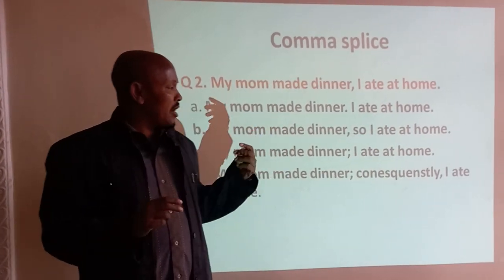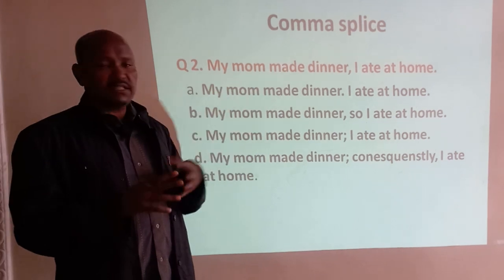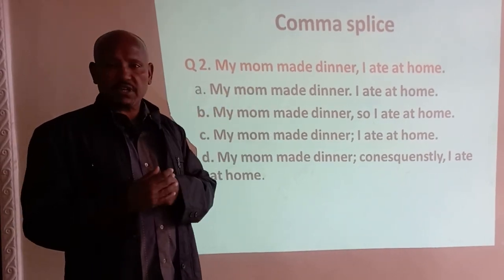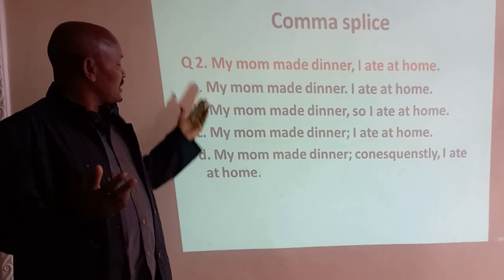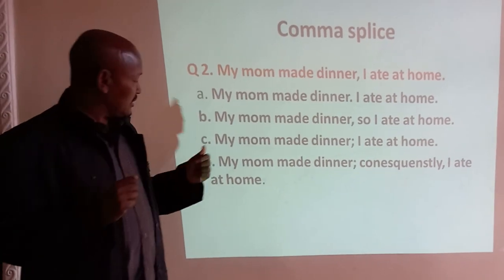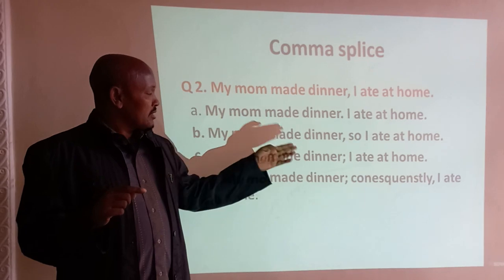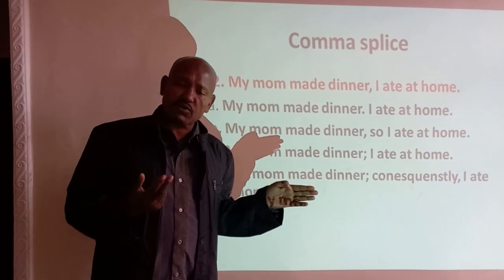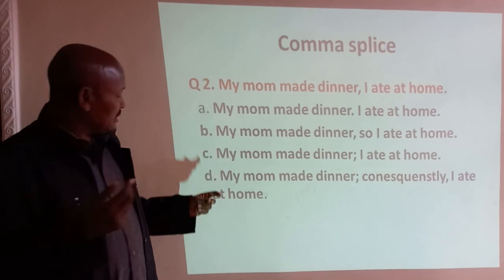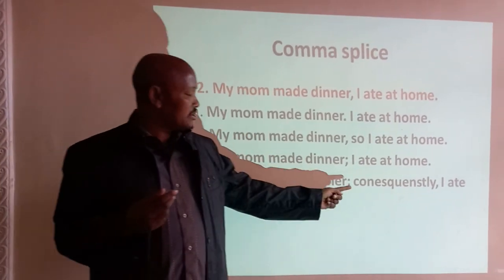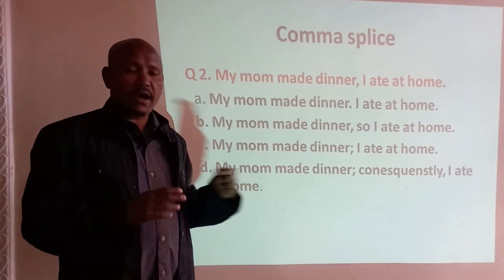The second correction uses a coordinating conjunction: 'My mom made dinner, so I ate at home.' Because the second sentence is the result of the first, we insert the coordinating conjunction 'so' with a comma before it. The third correction uses a semicolon: 'My mom made dinner; I ate at home,' since the second clause is relevant to the first. The fourth way uses a semicolon with a supporting conjunction, because the second is the result of the first.